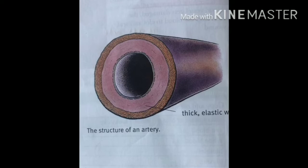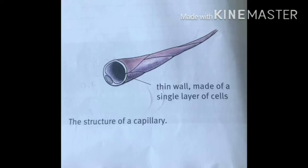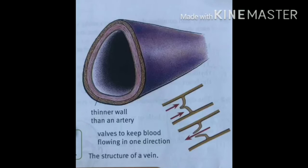Arteries have very thick, strong, elastic walls. They need to be strong because they have to withstand the strong forces as the heart pumps blood through them, and they carry blood away from the heart. Capillaries are very tiny and have thin walls made up of only one layer of cells. This means that substances in the blood such as oxygen and sugar can easily pass out, supplying cells with what they need and taking away their waste products.